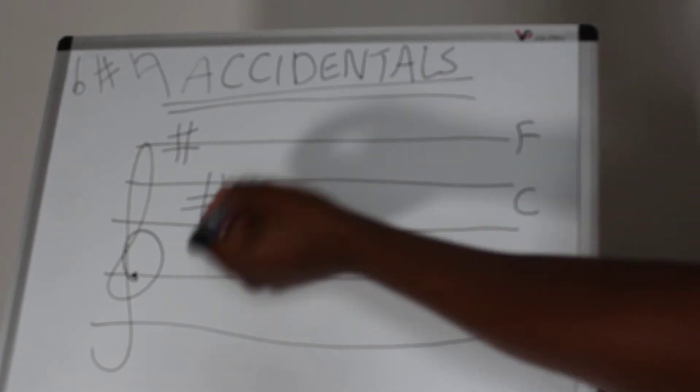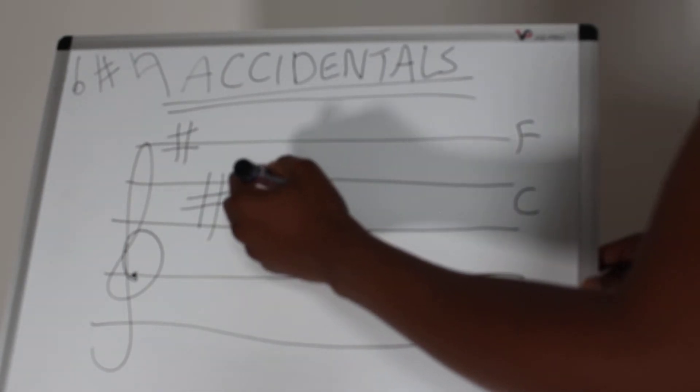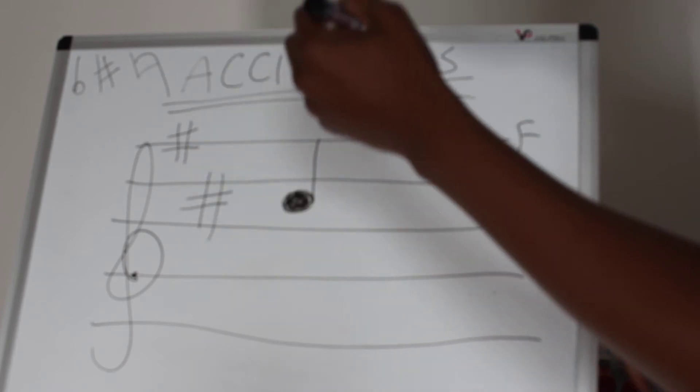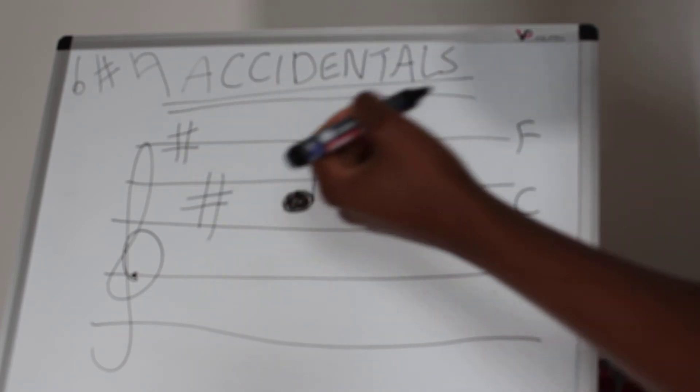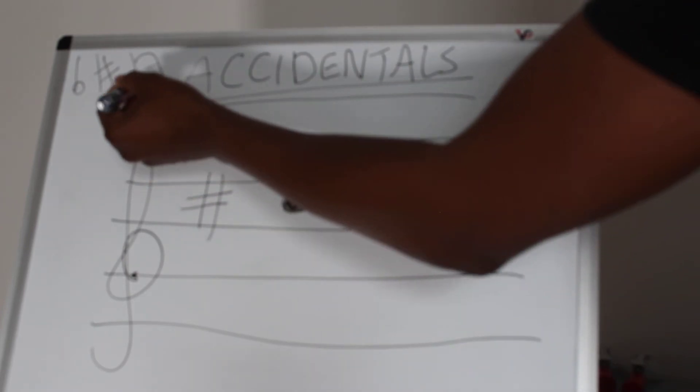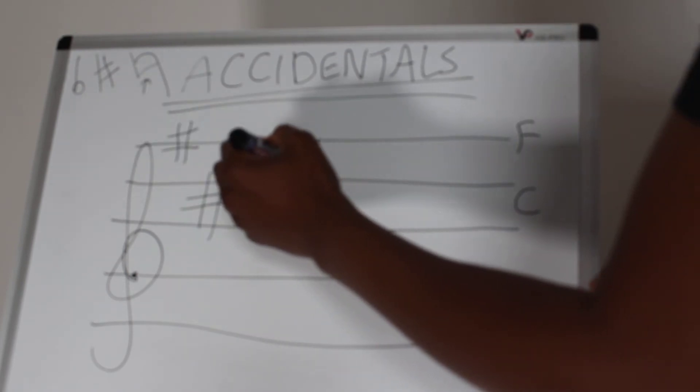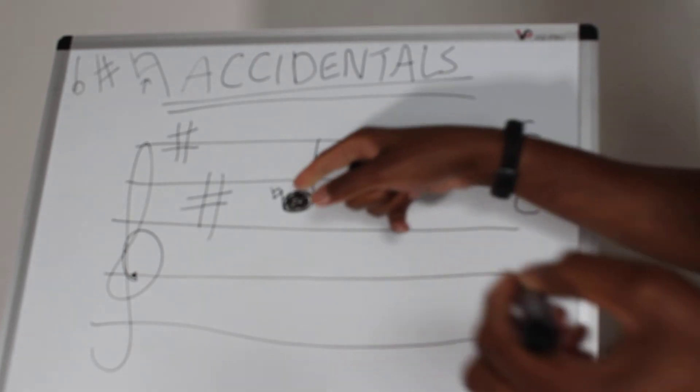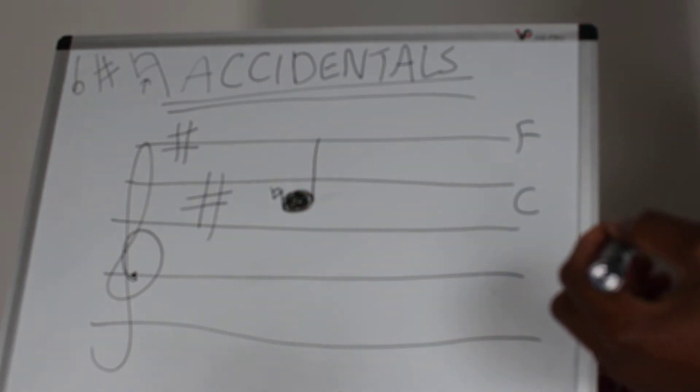Let's say I wanted the performer to play a natural C, the white note as opposed to the black note, the sharp note. I would add what's called a natural sign, which is this symbol here. I just add that to this note and then the performer knows that this is a C natural.